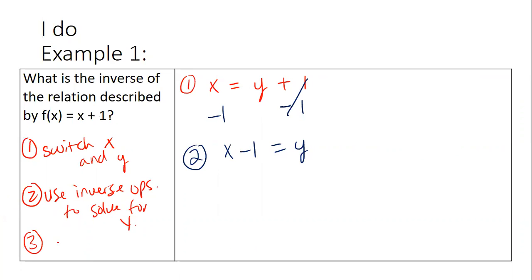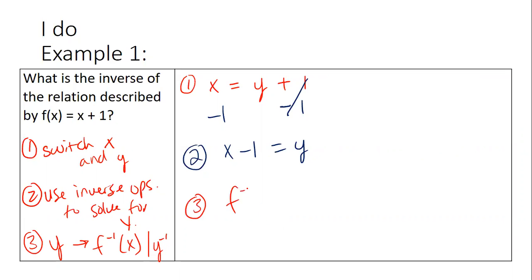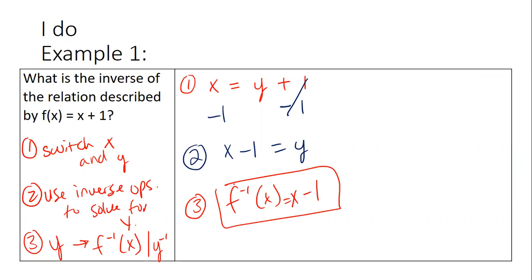Our final step is to replace our y with the inverse symbol, so f⁻¹(x). Occasionally you may see it as y⁻¹. So my final answer is the inverse equals x minus one. Does that sound easy enough? Questions, comments, concerns?